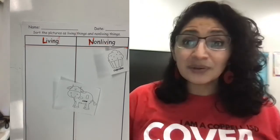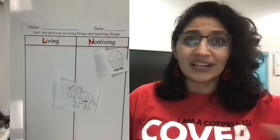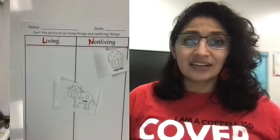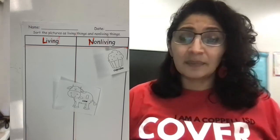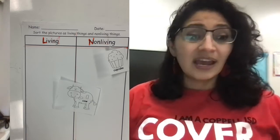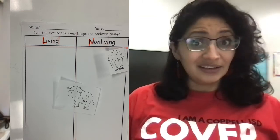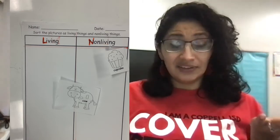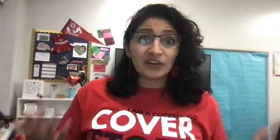And that's what I'd like for you to do today. You have the rest of these to go through and you can either cut them out or draw them and put them on that T chart — is it living or is it non-living? And remember, when you're trying to figure it out, those three things are really important: does it eat, does it breathe, and does it grow? All right friends, have a good time. We'll see you tomorrow. Bye.